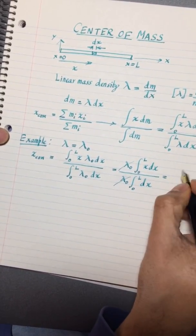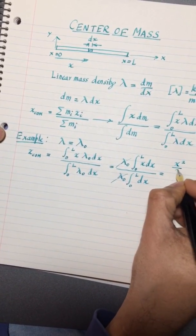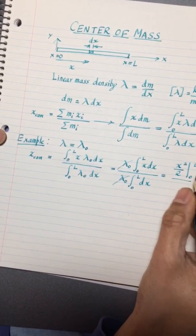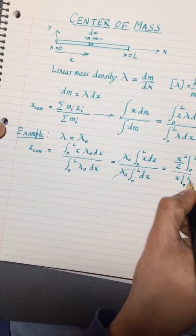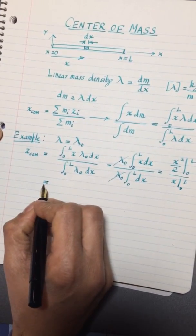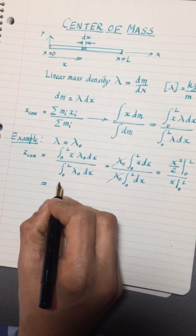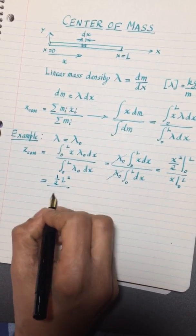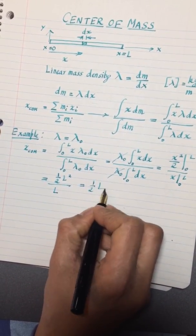Now you can see that the lambda naughts cancel out. If I evaluate this I'm going to get x squared over 2 from 0 to L divided by x from 0 to L. So that's 1 half L squared divided by L or 1 half L. Now that's exactly what you expect.